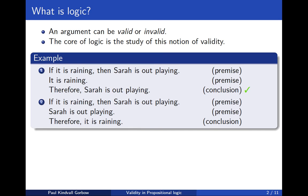On the other hand, we have this argument with the premise that if it is raining then Sarah is out playing, and the premise that Sarah is out playing, and the conclusion that it is raining. And this is an invalid argument. The point here is that Sarah might well be out playing even if it is not raining.